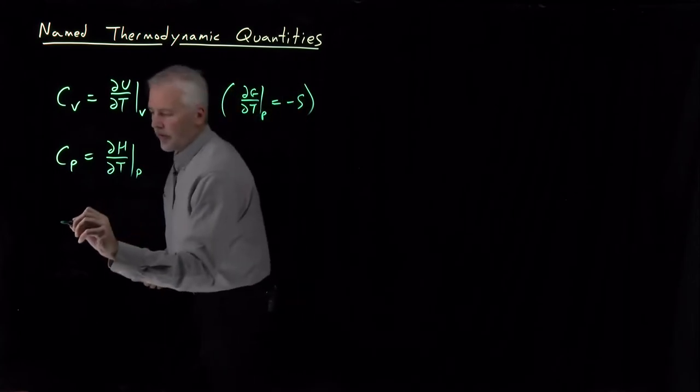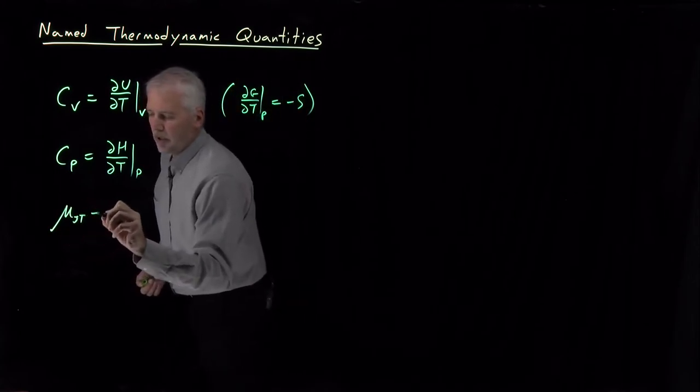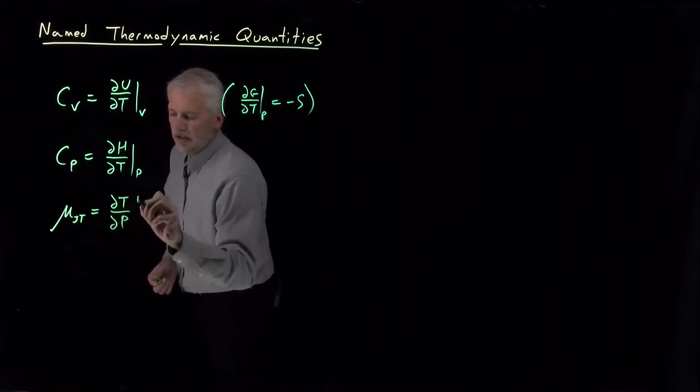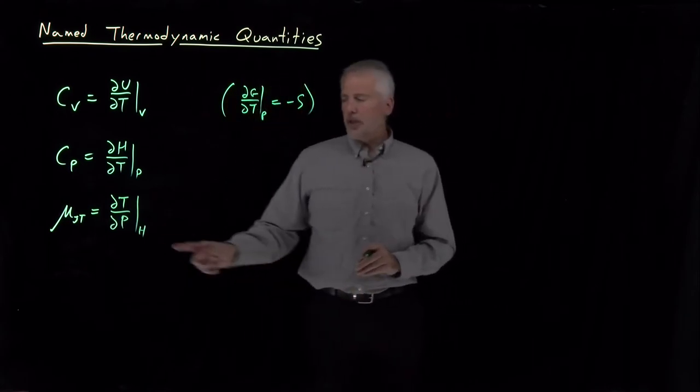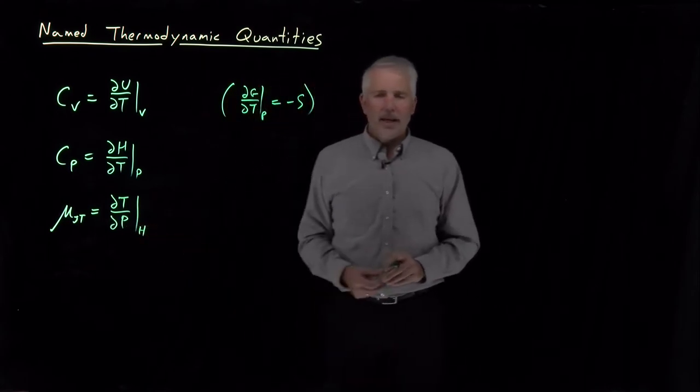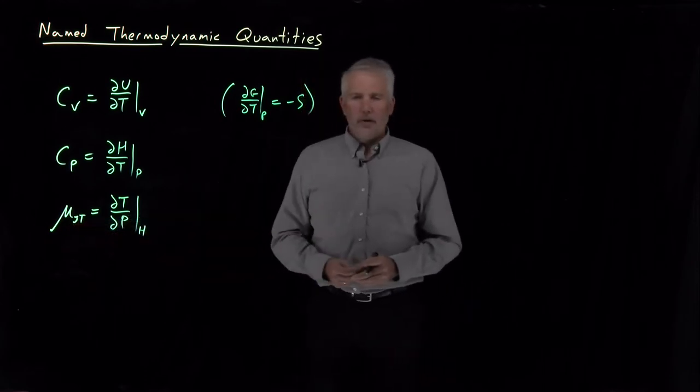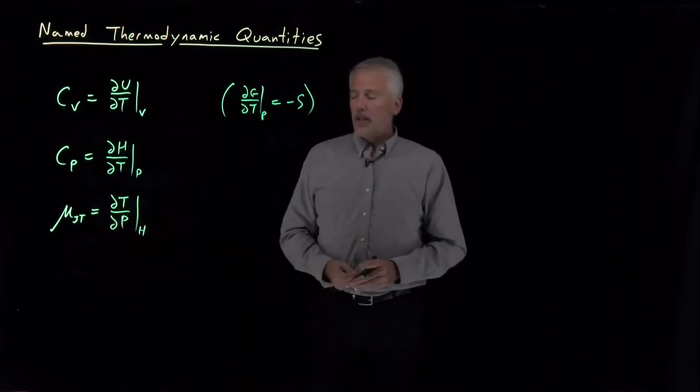The other named derivative we've seen so far is the Joule-Thompson coefficient, which tells us how quickly the temperature increases as we increase the pressure on an object isenthalpically, as we do it at constant enthalpy.